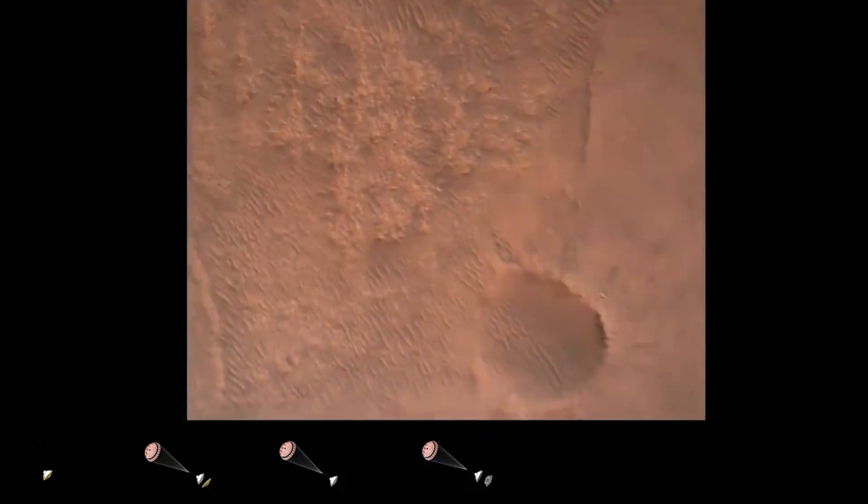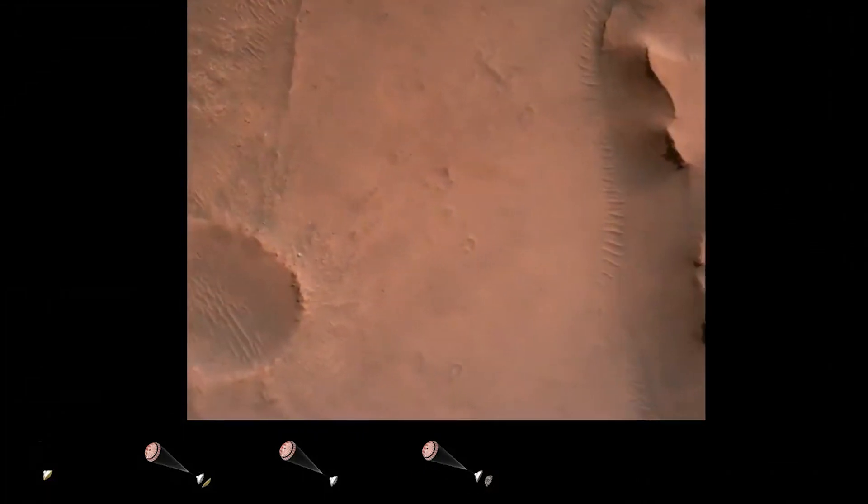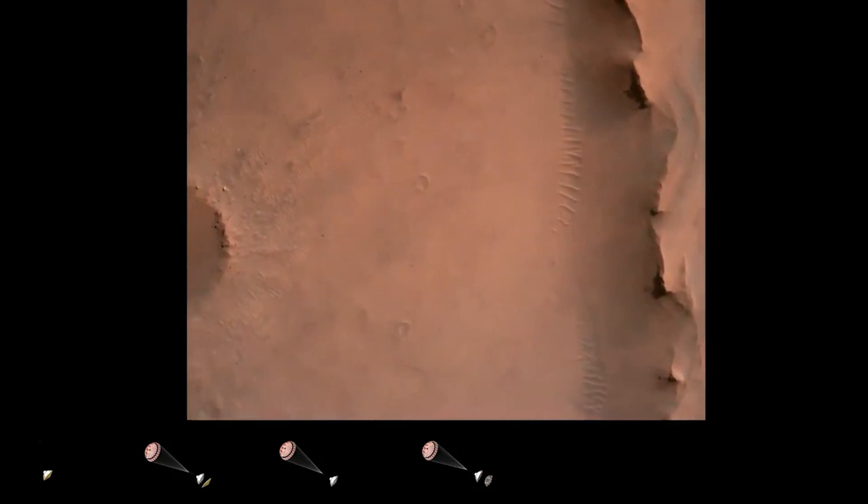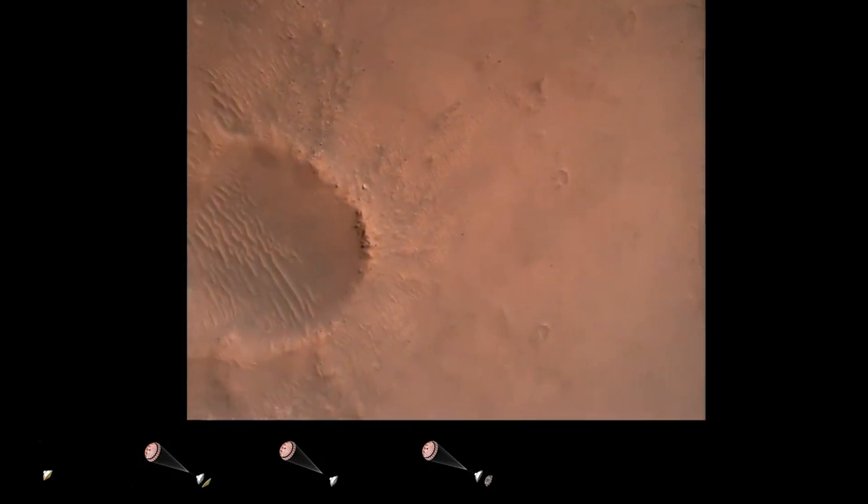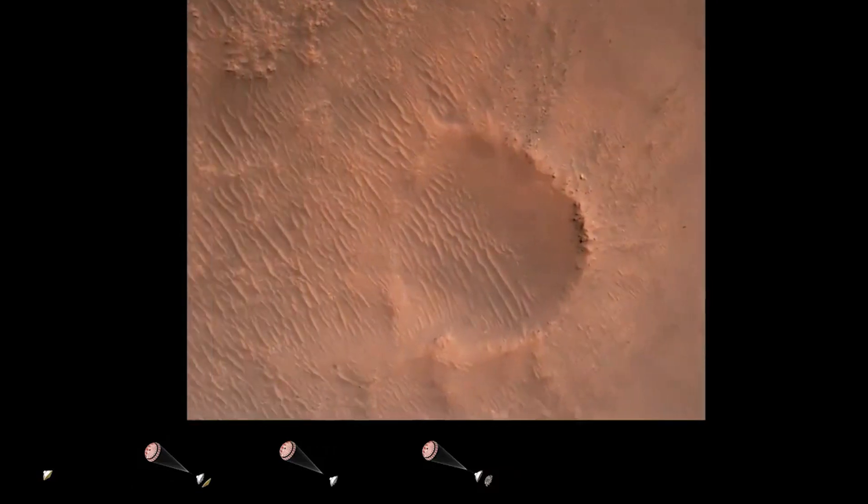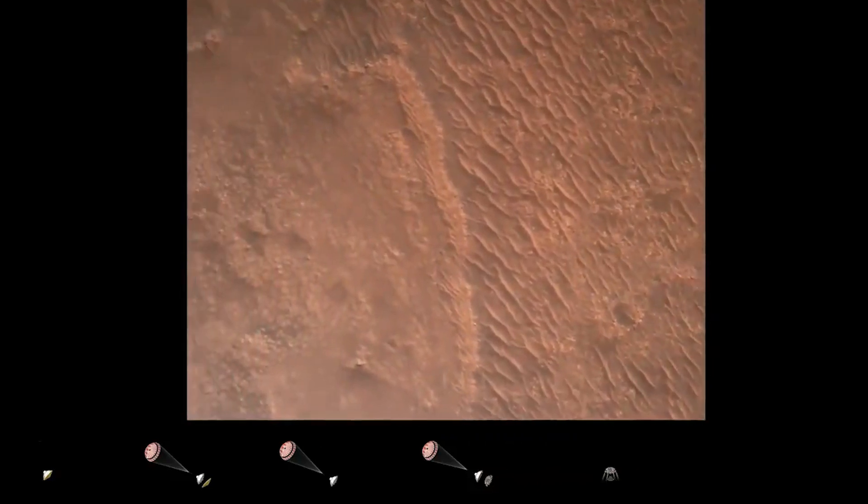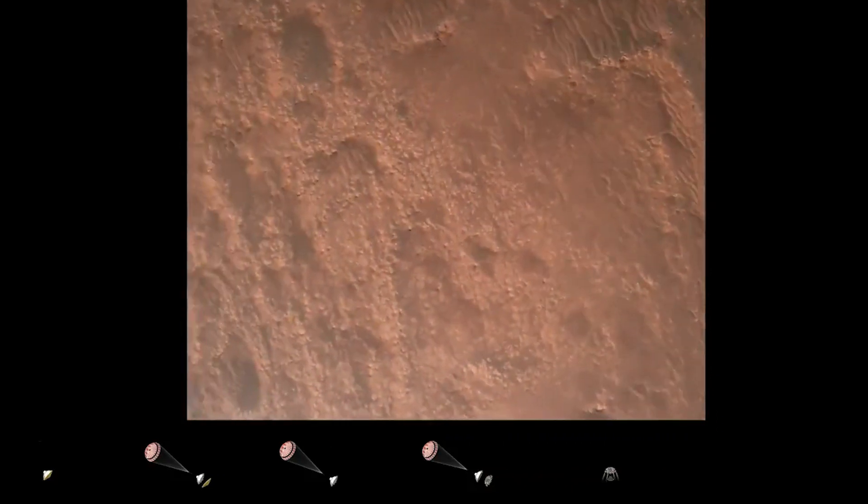Back shell separated. Current velocity is 83 meters per second at about 2.6 kilometers from the surface of Mars. We have confirmation that the back shell has separated. We are currently performing the divert maneuver. Current velocity is about 75 meters per second at an altitude of about a kilometer off the surface of Mars.